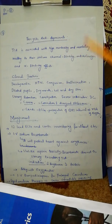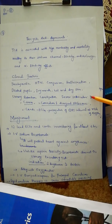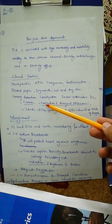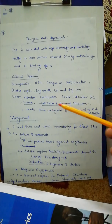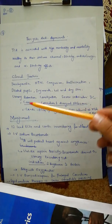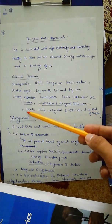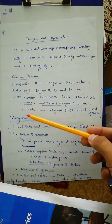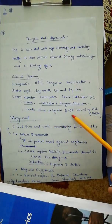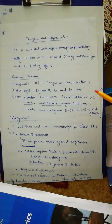In case of severe TCA intoxication, remember three C's: first C is coma, second C is convulsion and divergent strabismus (divergent squint), and third C is cardiac problems — ECG showing prolongation of QRS interval and risk of arrhythmia.